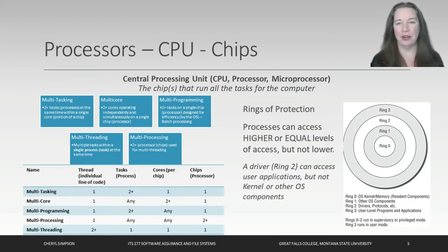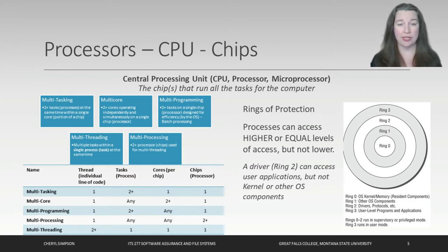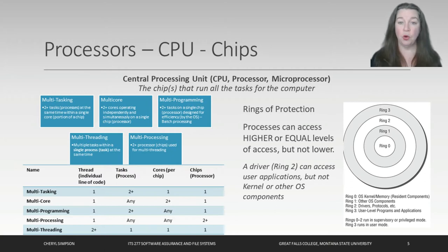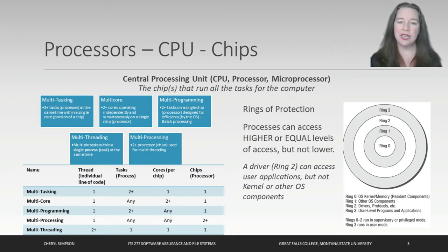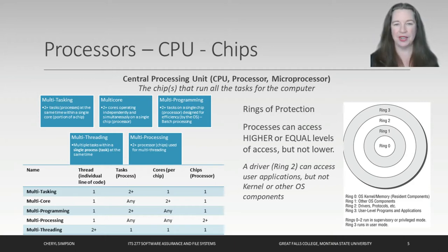When we look at hardware, the first thing we're going to be looking at is our processors, CPUs, and chips. You should have some understanding of what a processor or chip is at this point. The chip, or the processor, or the microprocessor is the CPU — the central processing unit for the computer. It's the thing that does all the work. Once you get to the concept of a chip, we can start discussing the differences between multitasking, multicore, and multiprogramming.